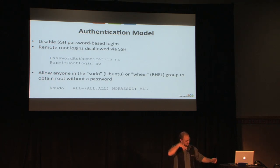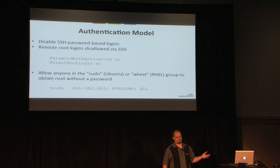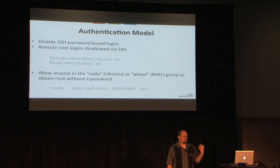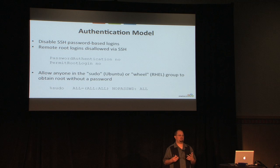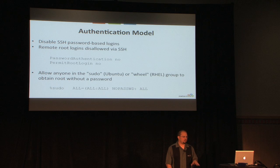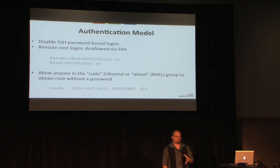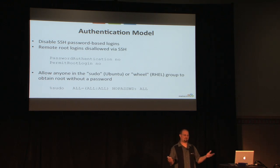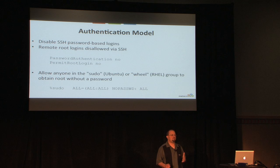For authentication, we assume images need to reach a known state where the client's configuration management system can take over — whether that's puppet, chef, salt, or manual configuration. This is just the initial seed point. Our recommendation is to provide a base image that boots cleanly and then your standard process — configuration management — configures it into something meaningful like a web server, database server, or application server.